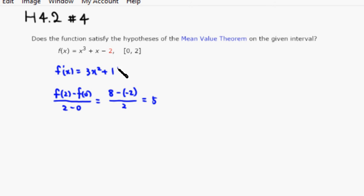We want this equal to 5, which is 3x squared plus 1. Subtract 1 from both sides so it's equal to 4. Then divide through by 3, so x squared is equal to 4 over 3.